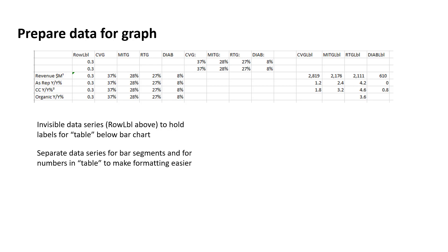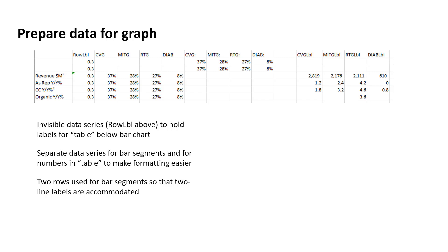Secondly, we have separated all of the data into different data series. There's a group of data series for the bar segments — those are the first two rows — and then a group of data series for the data that's going to be positioned below each of those segments. We do this because it makes the formatting a lot easier when we build the chart. I have two rows at the top, not just one, because it makes those bar segments taller — giving them more presence and also allowing for a two-line label, so the text fits without running outside the actual bar segments.